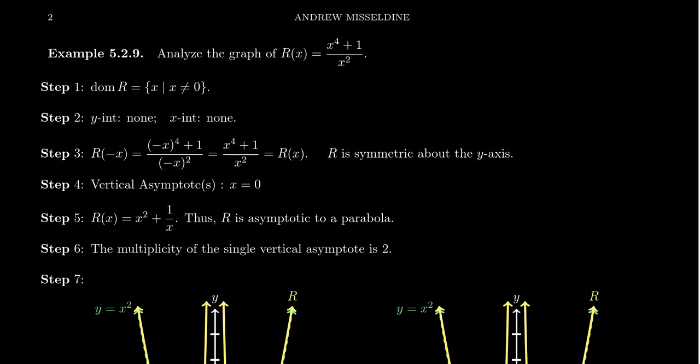In this video, I want to show us how we can graph a rational function without any technology whatsoever. We're just going to use information about the asymptotes and about the intercepts and how the function behaves near those intercepts and asymptotes to graph this thing.